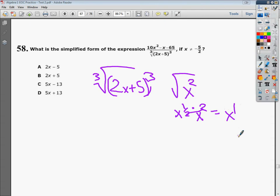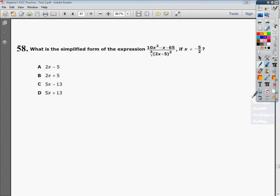Same thing with the cube. You're dealing with x to the third. Well, 3 times 1 third is x to the first power. So basically, whatever is inside that parentheses just pops itself out. The cube root and the cubed part cancel each other. So what you're left with is 10x squared minus x minus 65 over 2x plus 5.